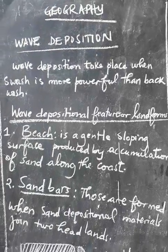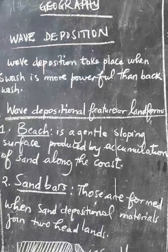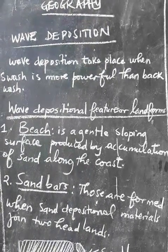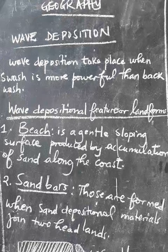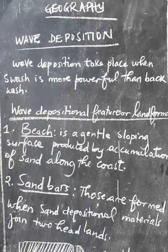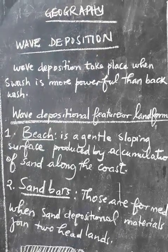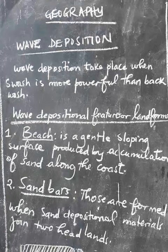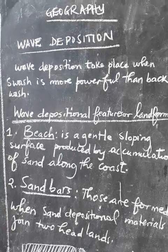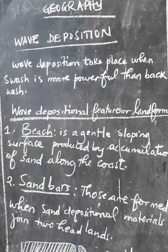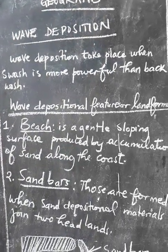Welcome again to this episode of Physical Geography where today we are going to talk about wave deposition. Wave deposition takes place when swash is more powerful than backwash. When swash is more powerful it will bring a lot of loads toward the coast, and when it reaches there the backwash becomes too weak, it will let those loads be deposited at the coast, leading to deposition.